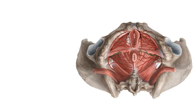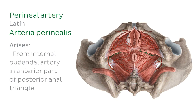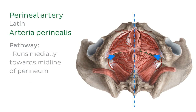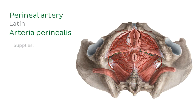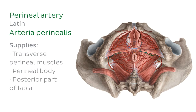The next artery that branches off the internal pudendal artery is the perineal artery, now seen highlighted in green. It arises from the anterior part of the posterior anal triangle, runs medially towards the midline of the perineum, and supplies the transverse perineal muscles, the perineal body, and the posterior part of the labia.